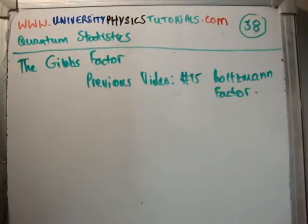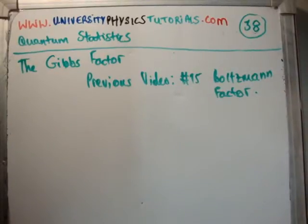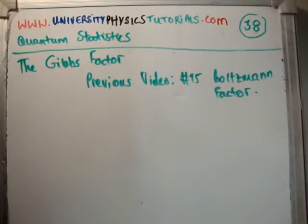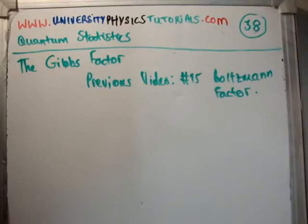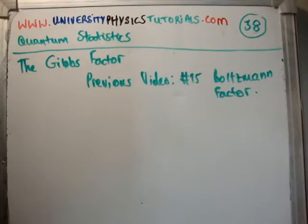To be honest, the argument here is the exact same as with the Boltzmann factor. So if you understand that, you're going to understand this. If you don't understand what I'm doing, you can always go back to that video. We're trying to analyze the probability of a particle having an energy when the particle is inside a reservoir. What we do is look at the ratio of two different probabilities — the ratio of the probability of two different energies — and from that we're able to get the Gibbs factor.